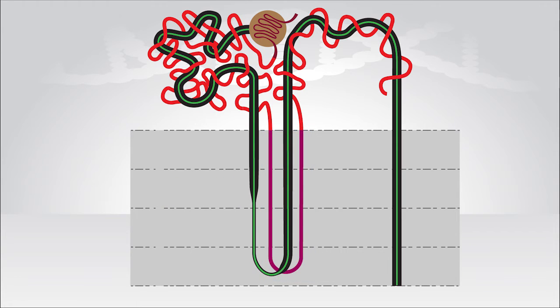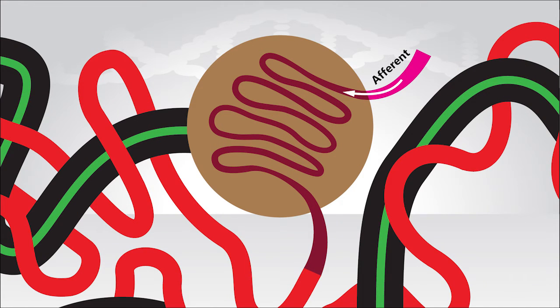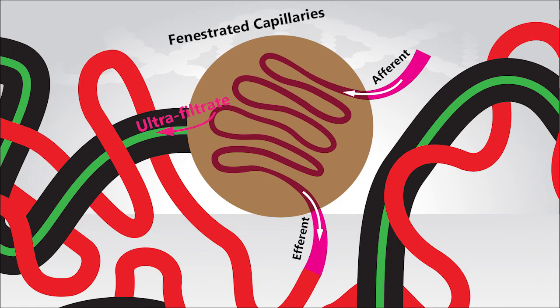Now the glomerular capillary network begins as the afferent arterial enters the glomerulus and ends as the efferent arterial exits the glomerulus. The primary function of the glomerular capillaries is to filter the blood and form the ultrafiltrate. They are able to do this mostly because the glomerular capillaries are fenestrated, which favors the formation of the ultrafiltrate, and also because they are situated between the afferent and efferent arterials, which regulate blood flow within the glomerular capillaries and thus regulate the formation of the ultrafiltrate.